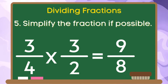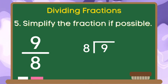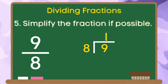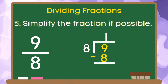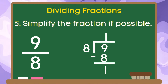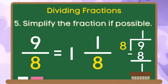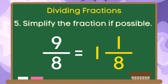And for our last step, let us simplify the fraction if possible. Since 9 eighths is an improper fraction, we are going to divide the numerator 9 by 8. 9 divided by 8 is equal to 1. Let us multiply our quotient 1 by 8 — 1 times 8 is equal to 8. Let us subtract: 9 minus 8 is equal to 1. To change 9 eighths to a mixed number, we copy the quotient as the whole number, the remainder as the numerator, and the divisor as the denominator. Therefore, the simplified fraction for 9 eighths is 1 and 1 eighth.